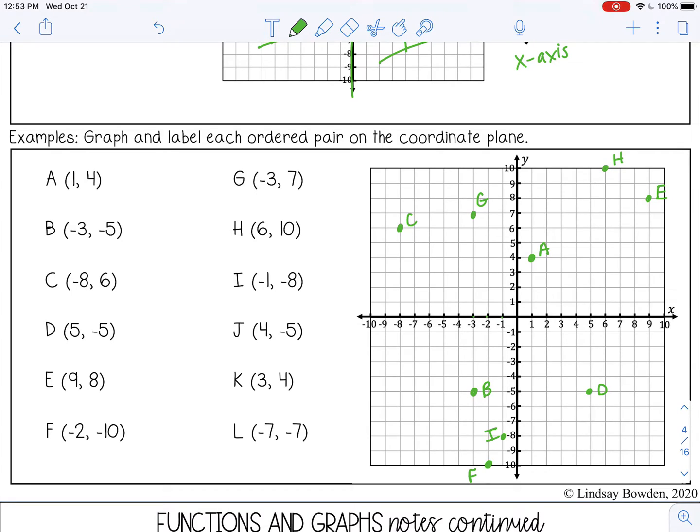J is a positive four, negative five, so right here beside D. K is three, four. So right three, up four. And L is negative seven, negative seven. So left seven, and then down seven.